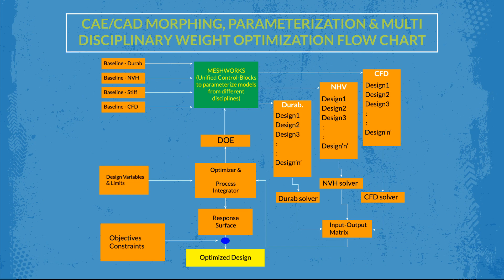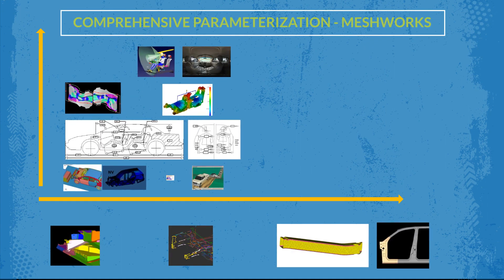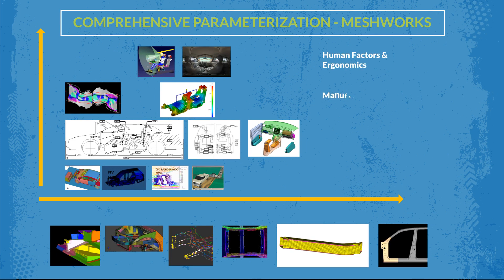Meshworks' comprehensive parametrization looks at not just shape and size as parameters, but goes beyond to have welding, adhesives, feature parameters, beads, darts, ribs, bulkheads, topology parameters, part extenders, material parameters, and thus providing wide array of parameters that engineers could use and benefit from.